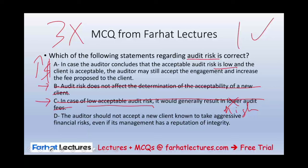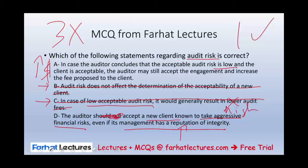Option D states the auditor should not accept a new client known to take aggressive financial risk, even if management has a reputation for integrity. That's incorrect — if management has integrity, you can live with aggressive financial risk. Option A states that if acceptable audit risk is low and the client is acceptable, the auditor may still accept the engagement and increase the proposed fee. That is correct. We'll just compensate by increasing the fee, assuming the client agrees. A is the correct answer.